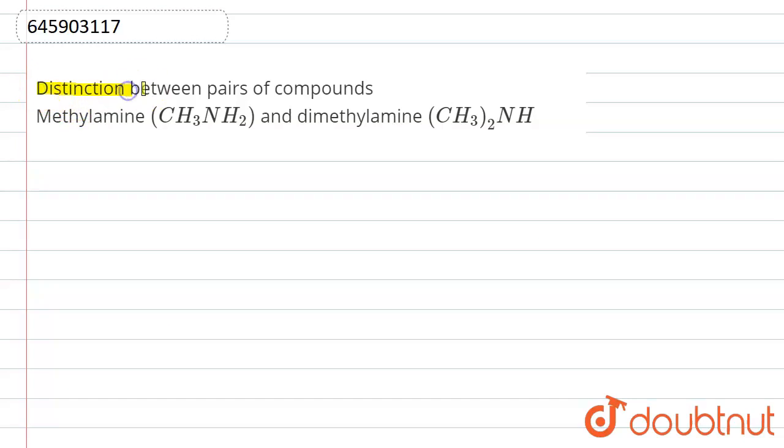So what is the basic difference between these two compounds? First of all, this compound methylamine is CH3NH2. Methylamine is one degree amine, so that we can say about this compound.